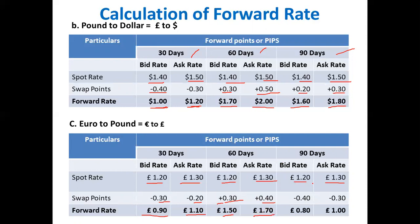For 90 days, the spot rate is the same. The forward points are 40 bar 30, which is a decreasing trend, so we deduct. 1.20 minus 0.40 equals 0.80. 1.30 minus 0.30 equals 1.00. The euro to fund forward rates are: 30-day 0.90 bar 1.10, 60-day 1.50 bar 1.70, 90-day 0.80 bar 1.00.